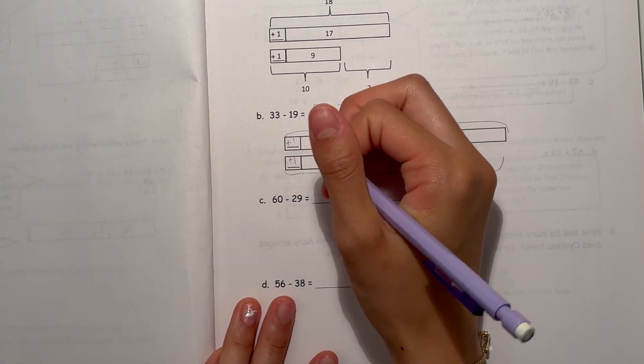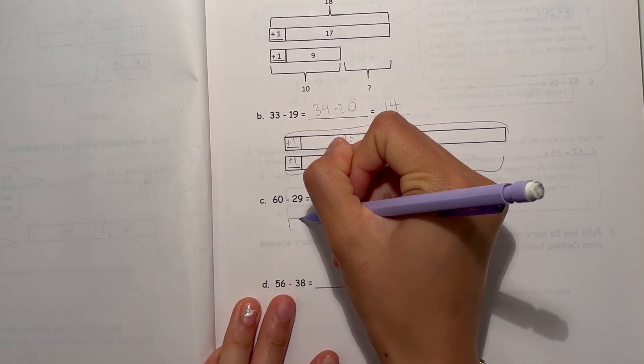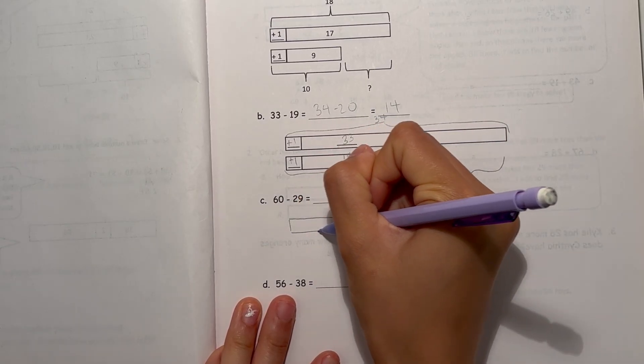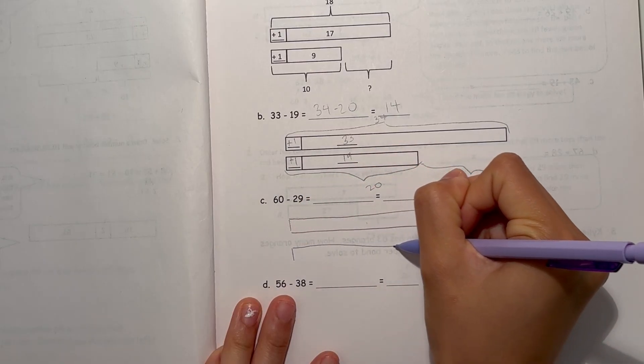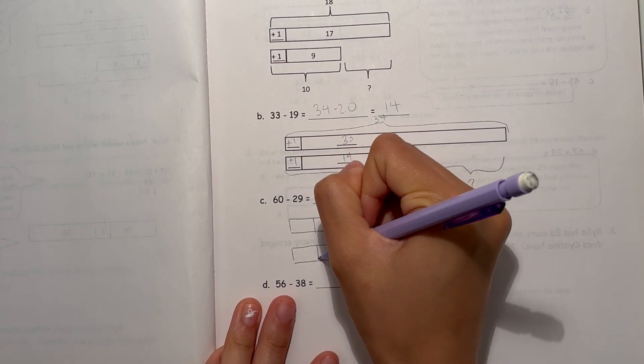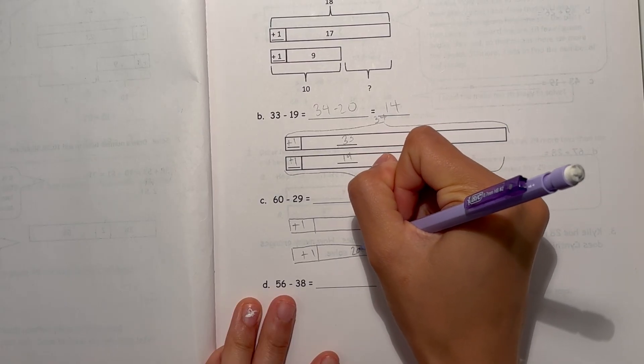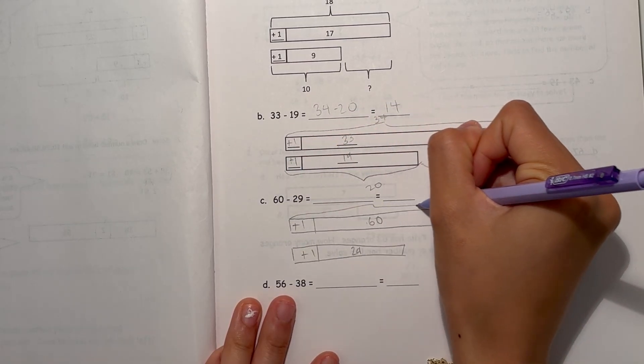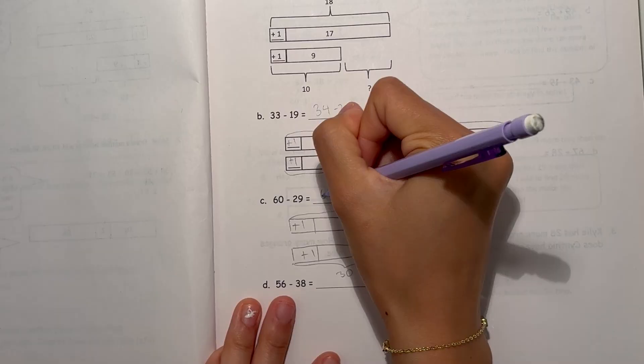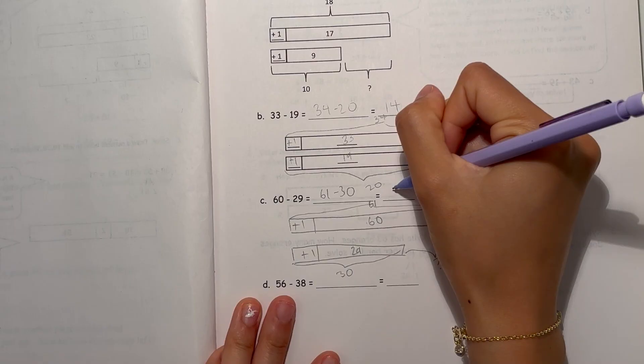Let's look at C. 60 minus 29. Alright. Plus 1, plus 1. So this is 60 and 29. So now this becomes 61, and this becomes 30. So 61 minus 30, you're finding the difference, which is 31.